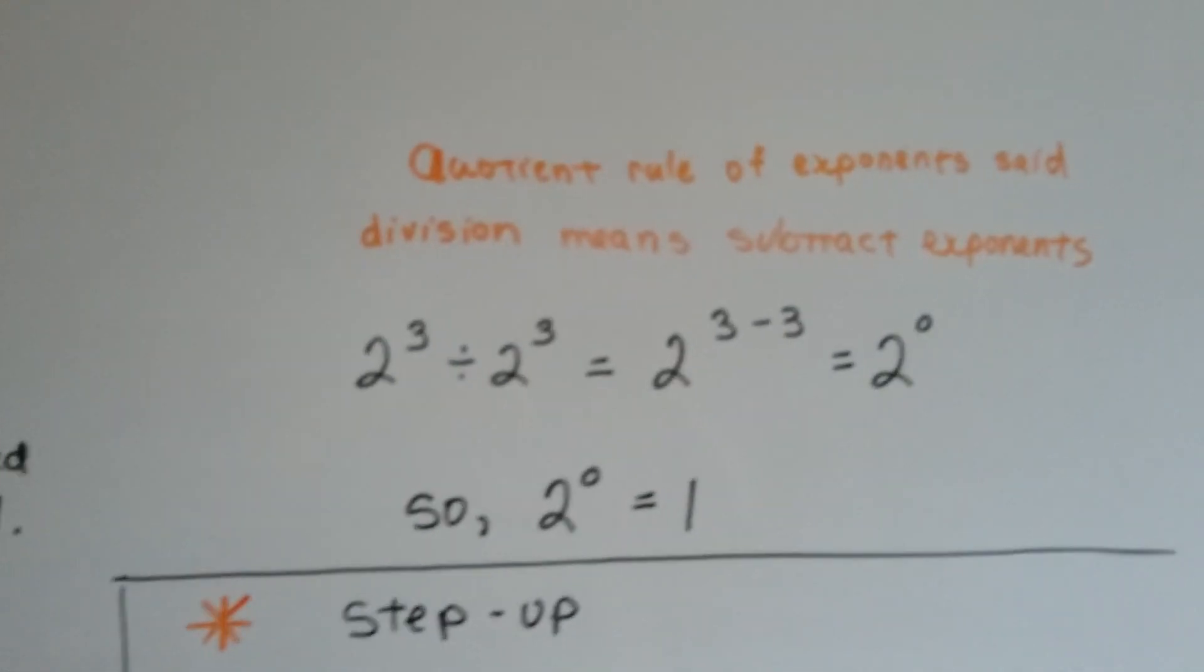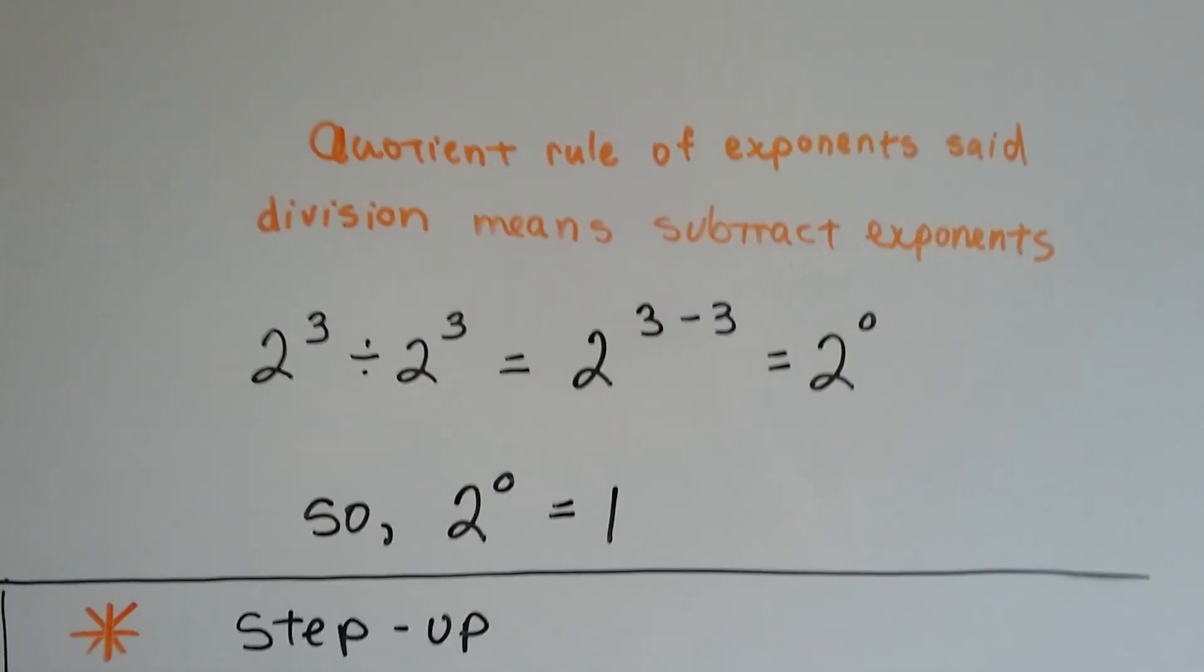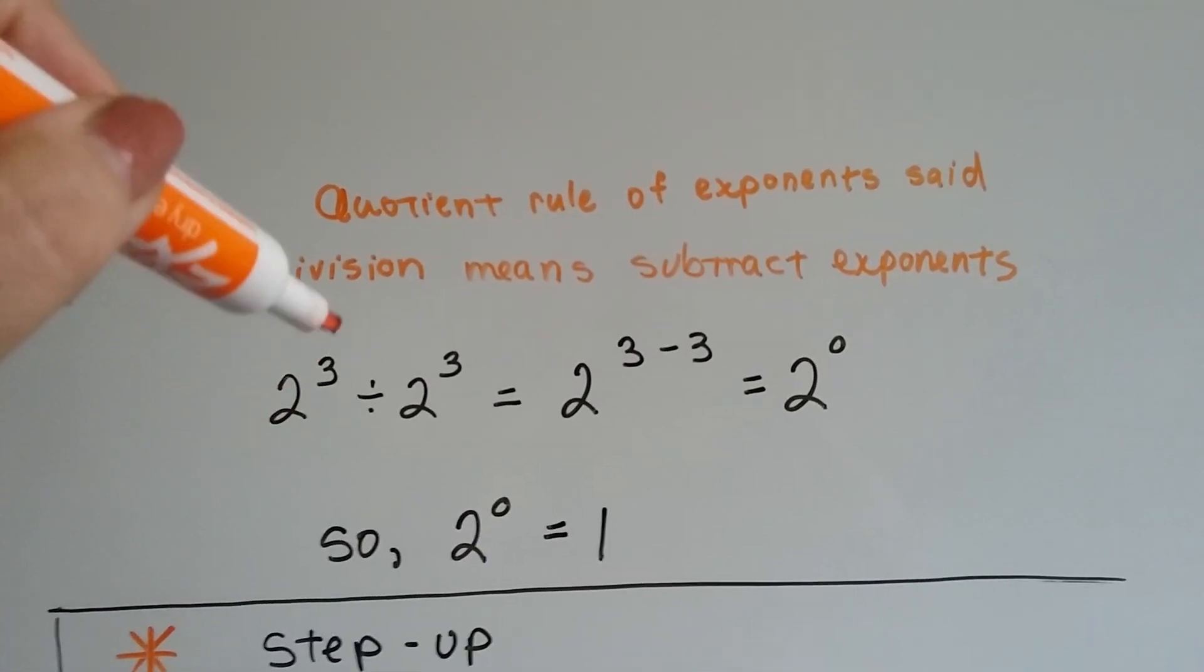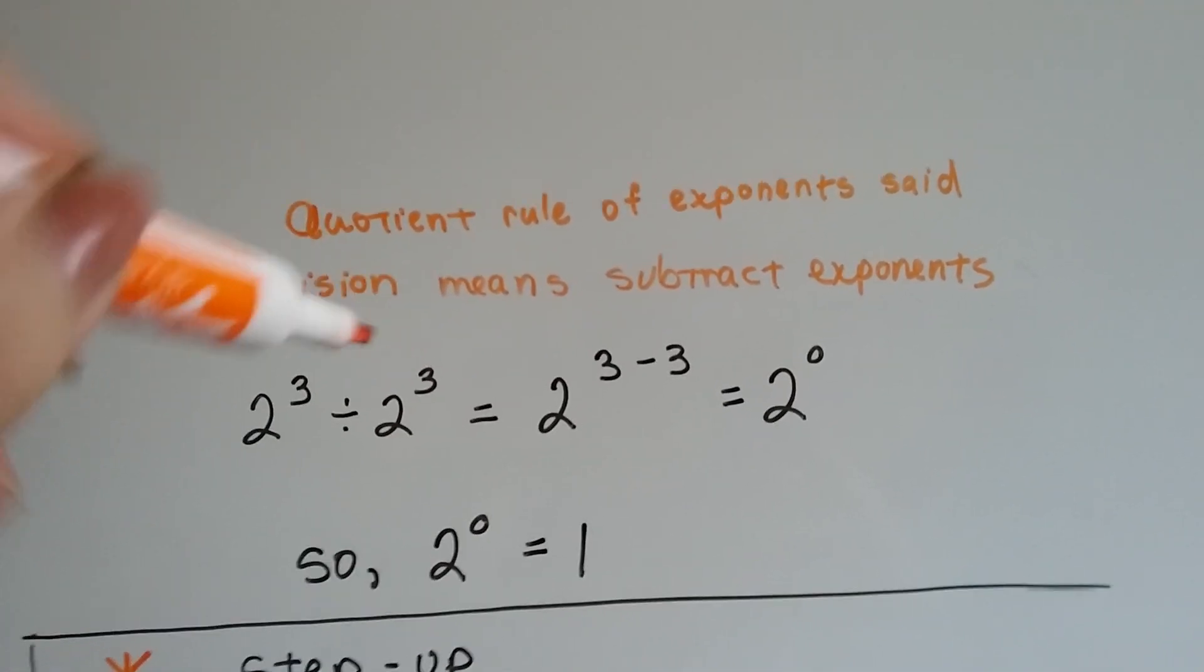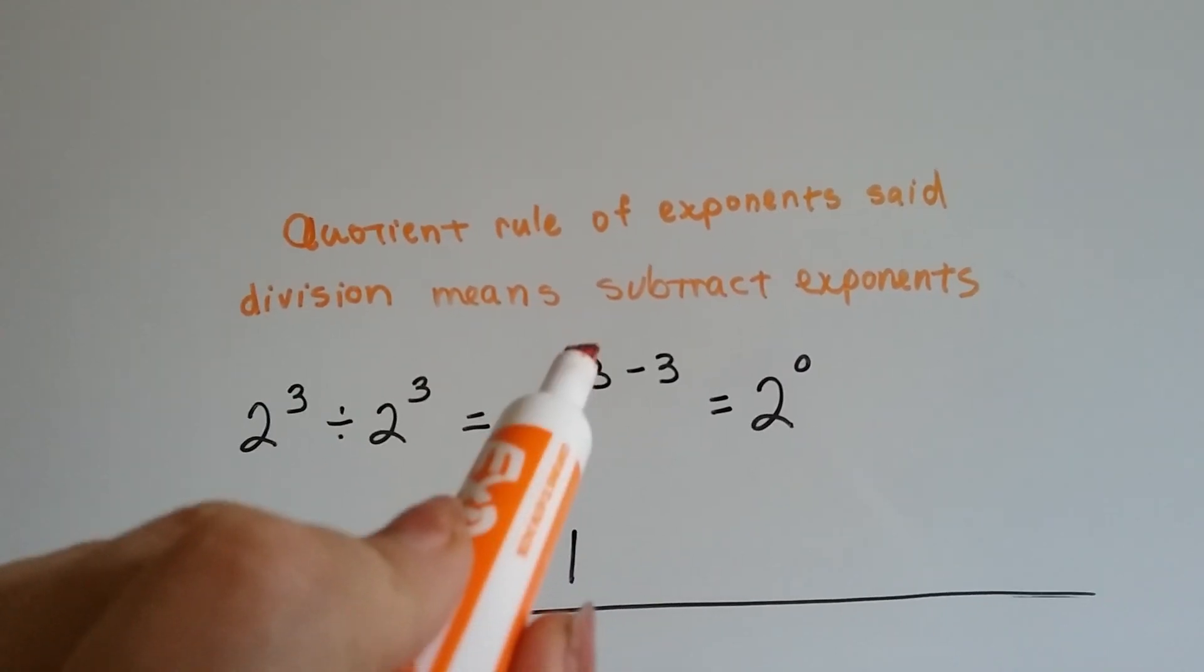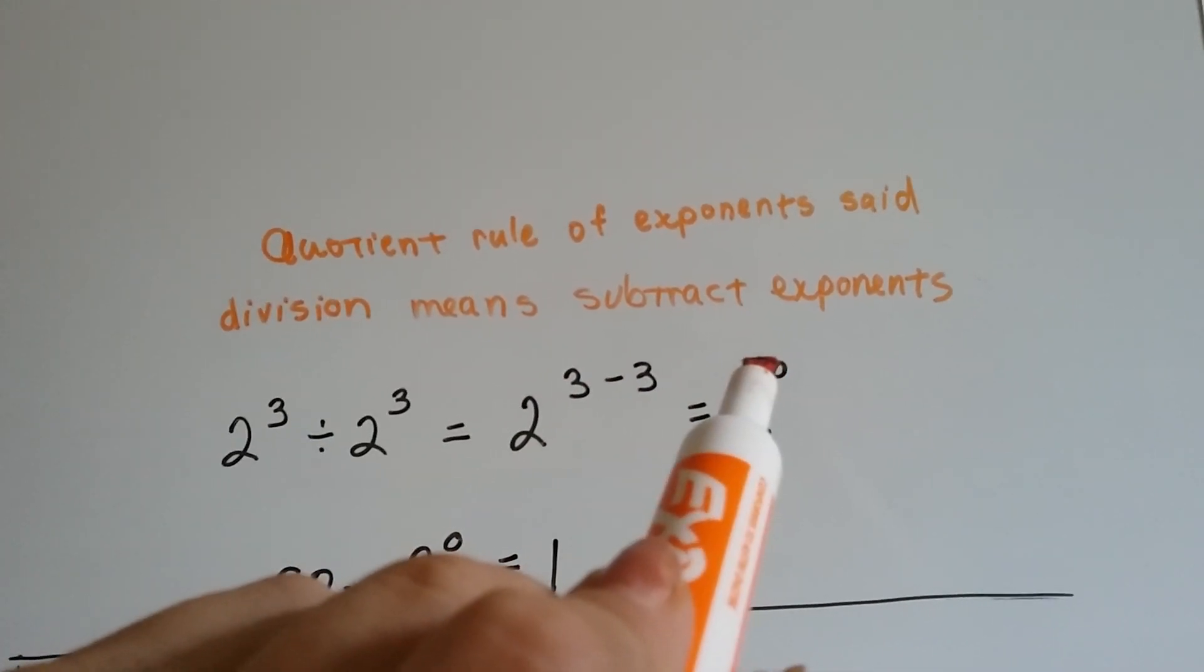As we learned in the last video in the quotient rule of exponents, division means to subtract the exponents. So if we have 2 to the third power divided by 2 to the third power, we can see the bases are the same, so we're just going to subtract these exponents. So 3 take away 3 is going to be zero.